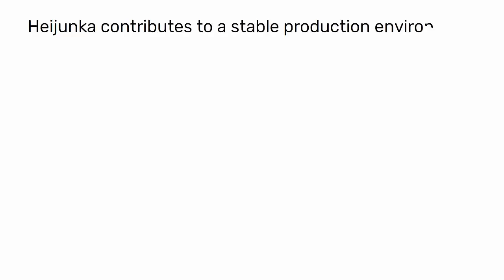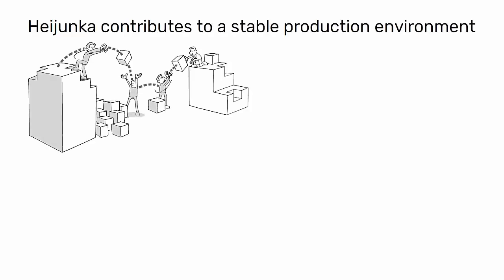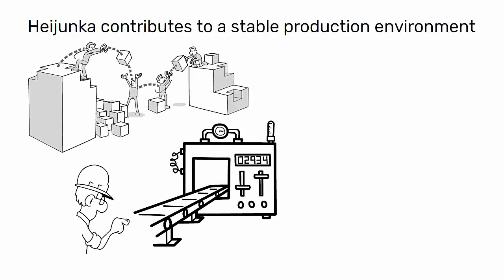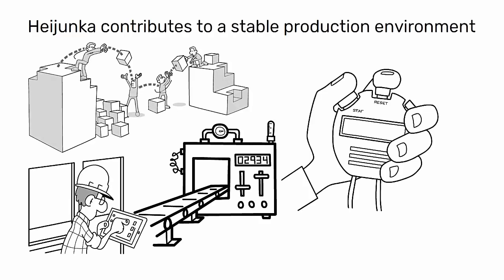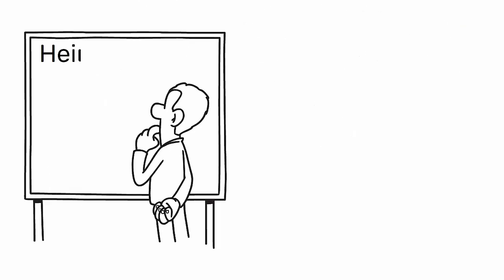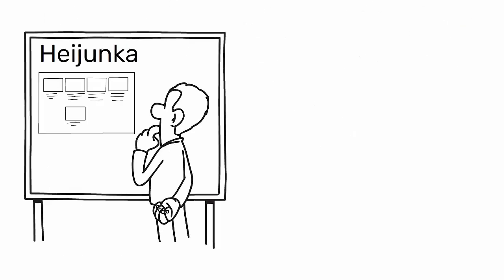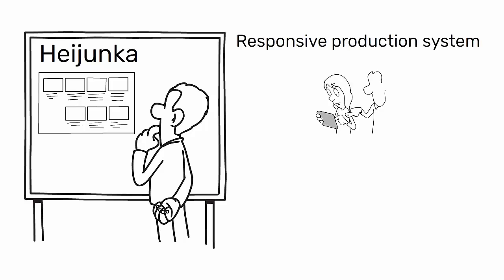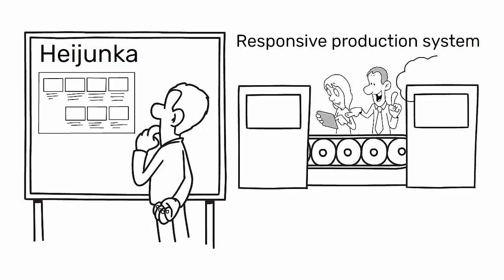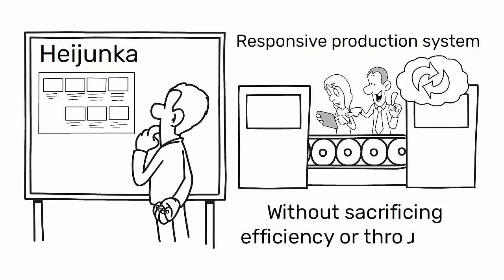Heijunka contributes to a stable production environment where resources are predictably deployed and lead times are reduced. By implementing Heijunka, industrial engineers can create a responsive production system that can quickly adapt to changes in demand without sacrificing efficiency or throughput.